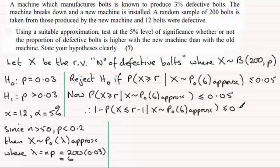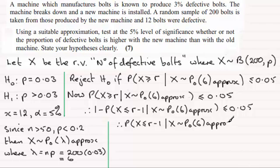If I rearrange this, making the probability X being less than or equal to R minus 1 the subject, we've got the probability that X is less than or equal to R minus 1, given then that X is distributed as a Poisson with a mean of 6 approximately—I know that's a bit of a handful to keep writing in, but I do encourage you to do that—then that's got to be greater than or equal to 0.95.